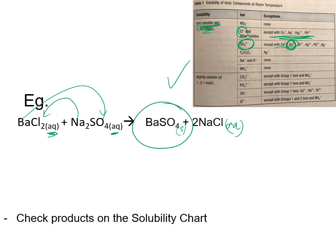Always predict your products and check them. You could check them before you write them down once you know what they're going to be. If they're both aqueous, you get no reaction — just write 'no reaction.' But if one of them is going to be solid, you write it out and balance the chemical equation.